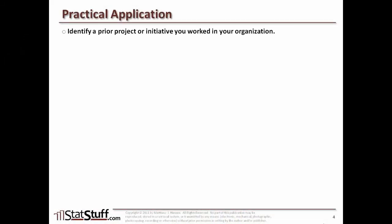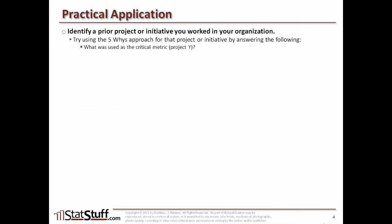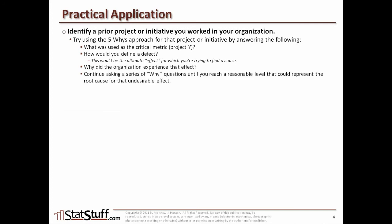Before we close this lesson, let's discuss how we can apply some of these concepts in a practical way. Identify a prior project or initiative you worked on in your organization, and try using the 5 Whys approach for that project by answering these questions: What was used as the critical metric — the project Y — in that project? How would you define a defect? This would be the ultimate undesirable effect for which you're trying to find a root cause. Then continue asking a series of why questions until you reach a reasonable level that could represent the root causes for that undesirable effect.